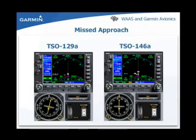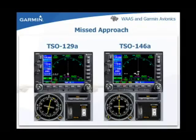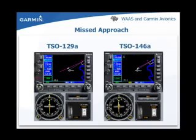WAAS units display different missed approach course sensitivity than Classic GNS units. When crossing the missed approach waypoint from the final approach course, the auto-suspend enunciation will appear above the OBS key. Pressing the OBS key on both units will activate the published missed approach procedure. The Classic unit provides one nautical mile sensitivity to the CDI and displays a green TERM for terminal sensitivity. The WAAS unit provides 0.3 nautical mile sensitivity and displays a green MAPR enunciation for missed approach.